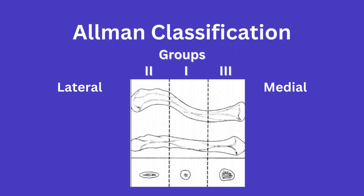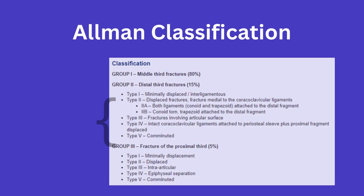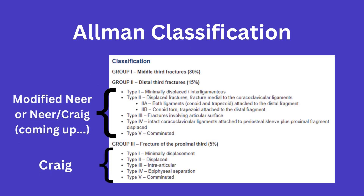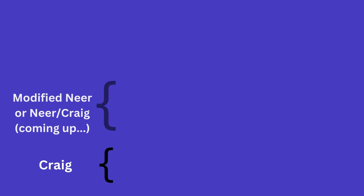Starting with the Allman classification, this one divides the clavicle into thirds. Group 1 includes fractures to the middle third of the clavicle, which accounts for 80% of clavicle fractures. Group 2 involves a fracture to the distal third, accounting for about 15%. And Group 3 involves fractures to the proximal third, which is the last 5%. There are further types within the groups, so feel free to pause the video to review. I just want to go over the level of depth that might be expected from a medical student.